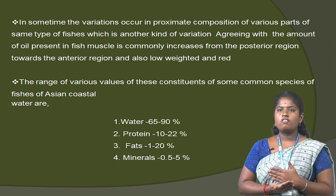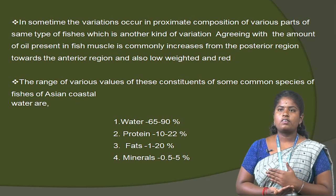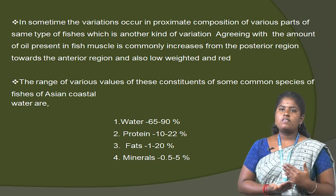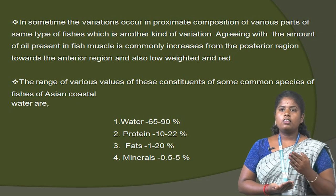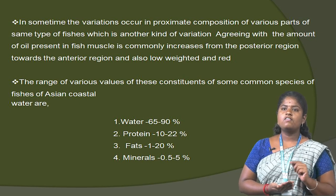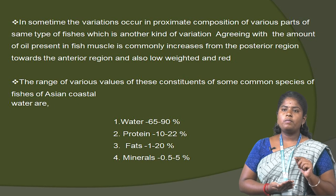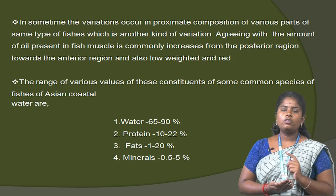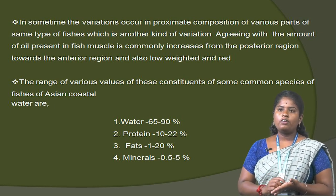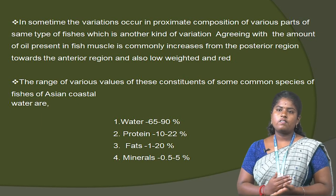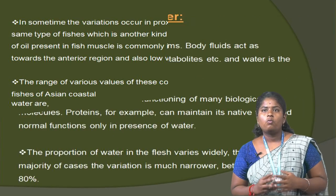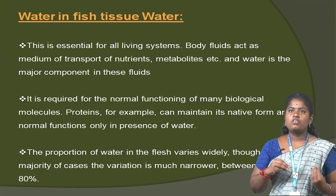The range of various values of the constituents of some species of fishes in Asian coastal waters are: water containing 65 to 90%, protein present at 10 to 20%, fat present at 1 to 20%, and minerals present at 0.5 to 5%.